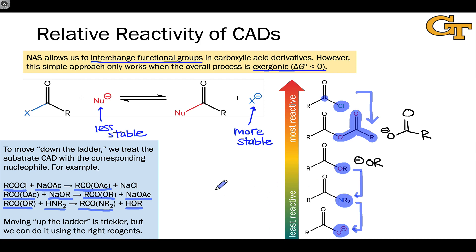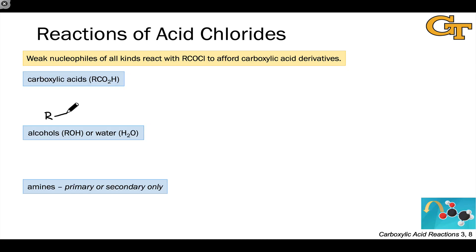To move up the ladder, we can't just use nucleophilic acyl substitution. We can't treat an amide with an alcohol and expect anything productive to happen. However, by using the right reagents to transform our starting material into something with a good leaving group on it, we can move up the ladder — and we'll see examples of that later in the course. Acid chlorides are an extremely electrophilic, extremely reactive class of carbonyl compounds that react with pretty much all manner of nucleophiles to generate any other type of carboxylic acid derivative.